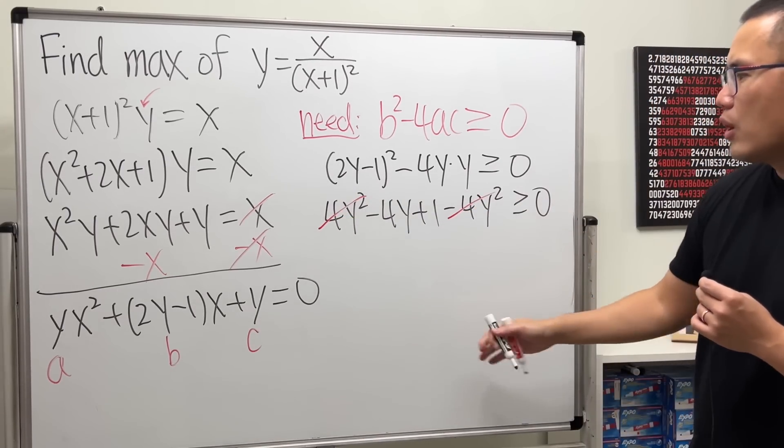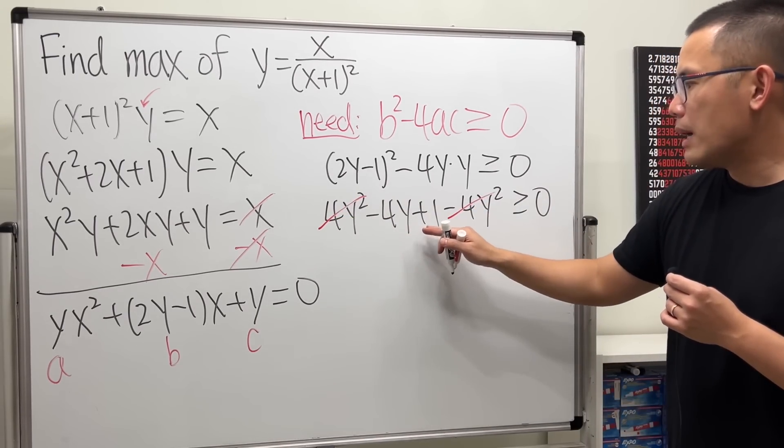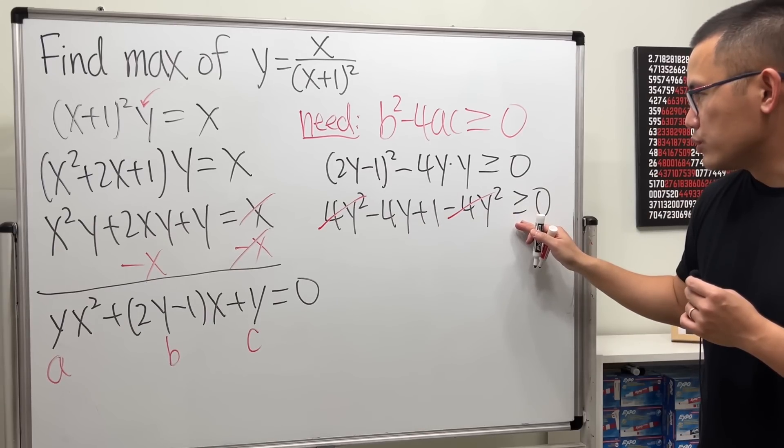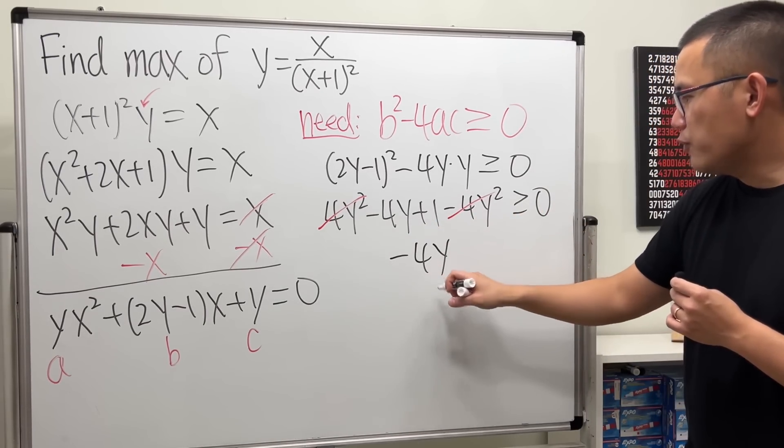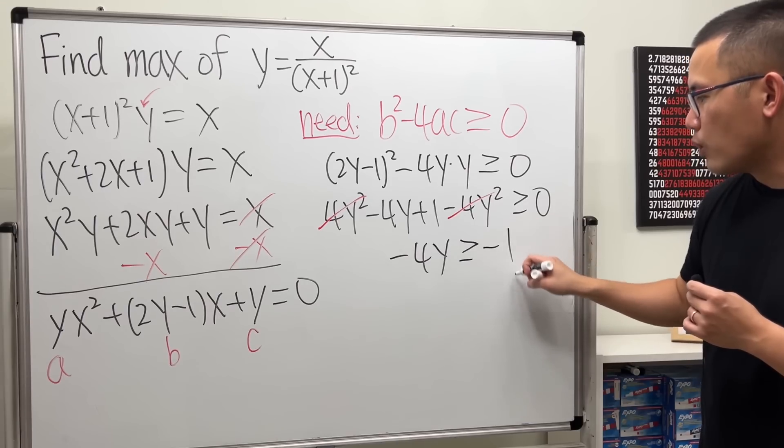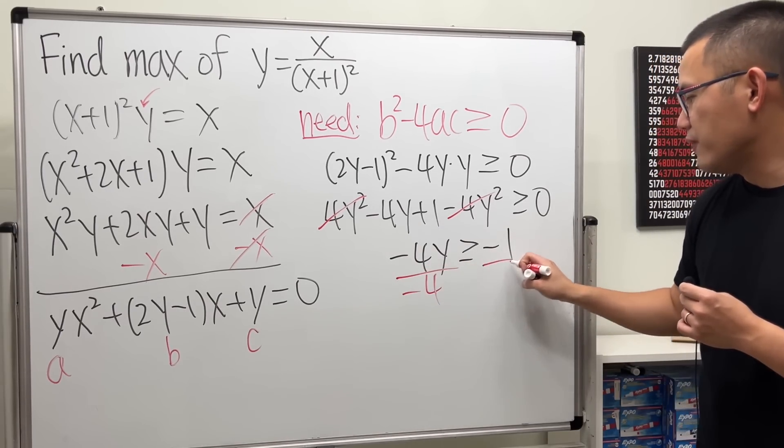This and that cancel, we have negative 4y plus 1 is greater than or equal to 0. Move this to the other side. Negative 4y is greater than or equal to negative 1. And then, divide both sides by negative 4.